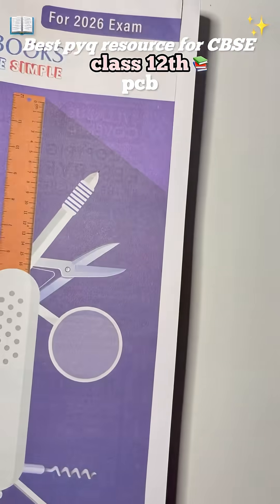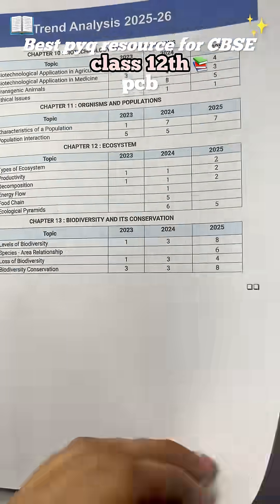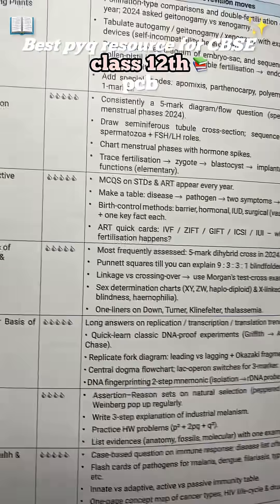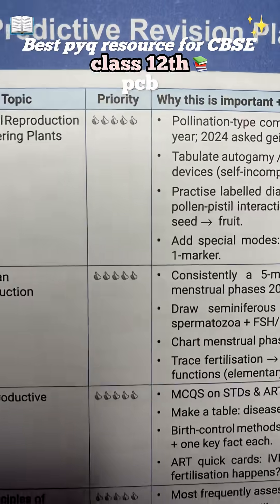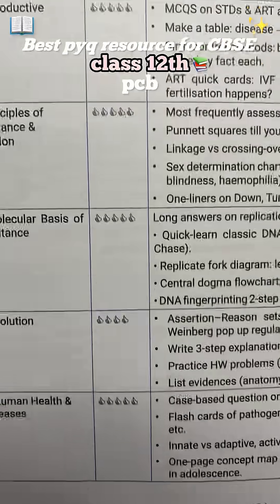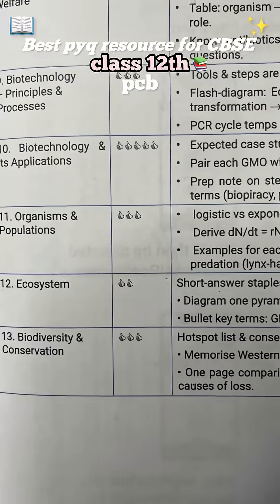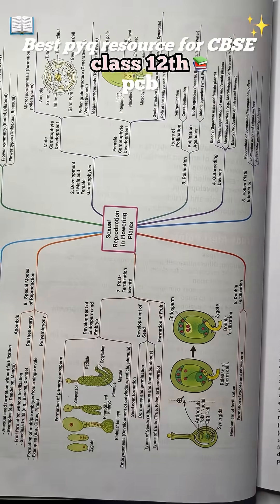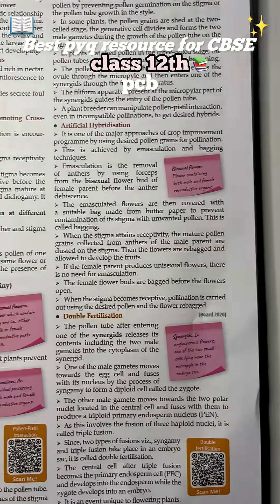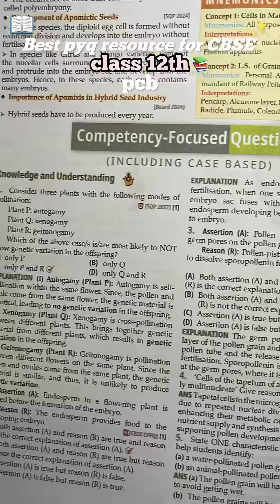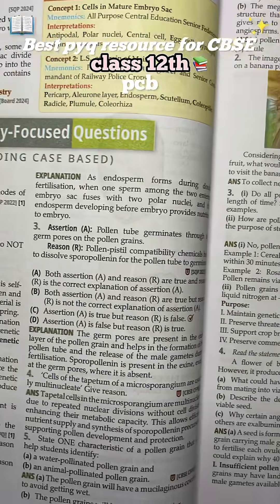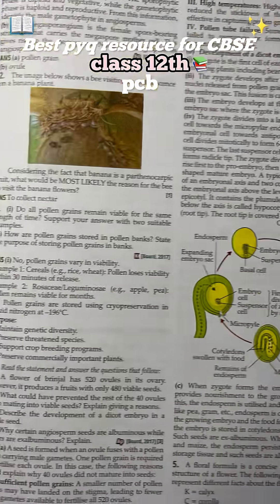Same for Biology — you'll get trend analysis and a revision planner, so you'll know which chapter is a priority. There are very engaging diagrams with mind maps, and also competency-based questions.